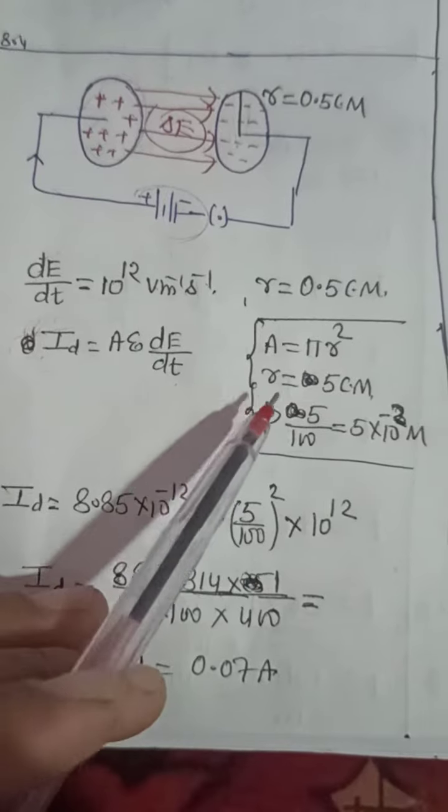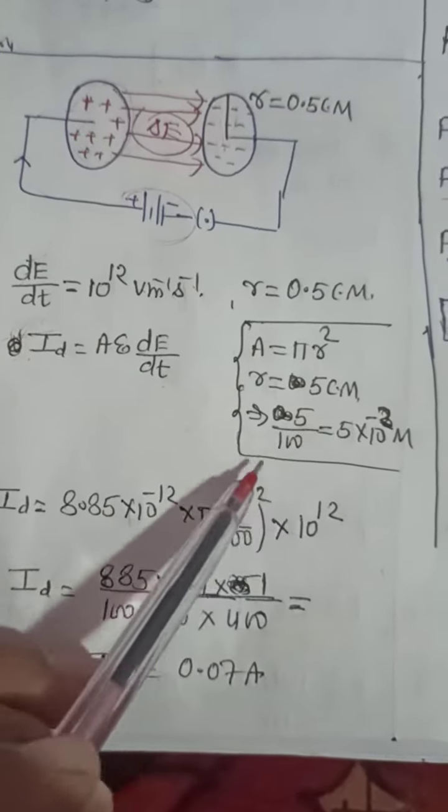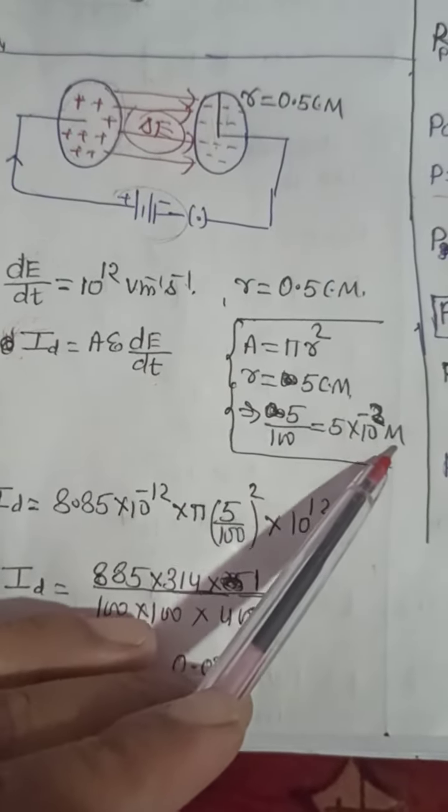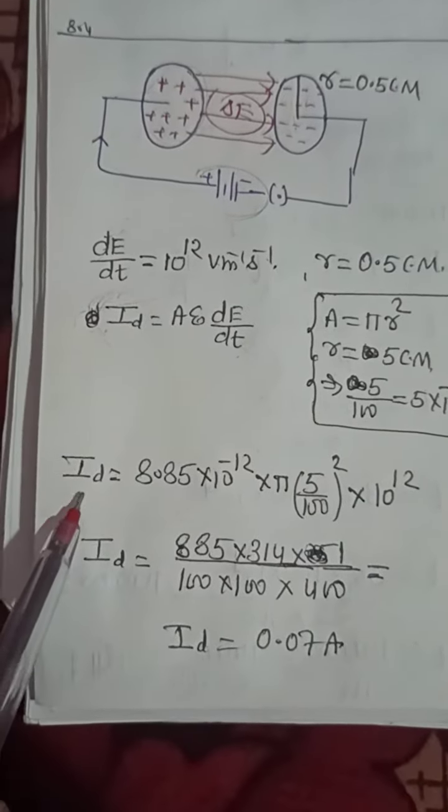So pi r square, area of circle, radius 5 cm. Convert to 5 into 10 to the power minus 2 meter. Now we will use the ID formula.